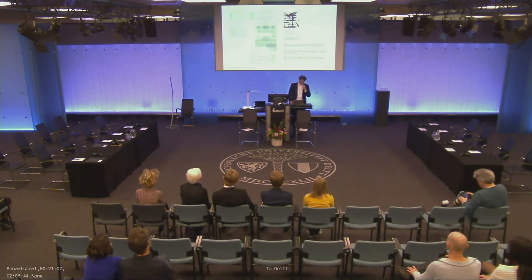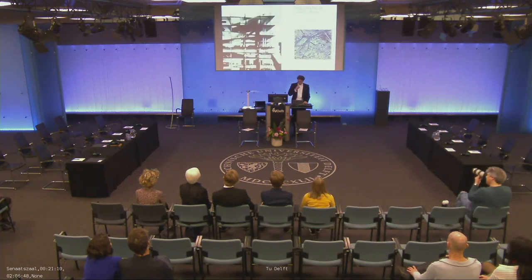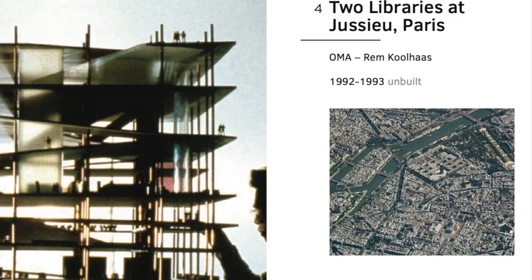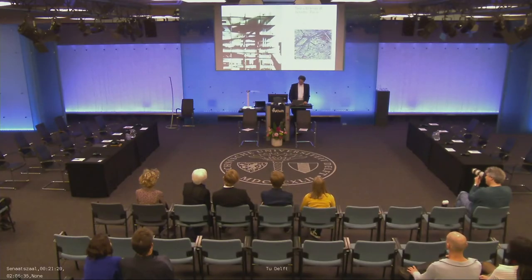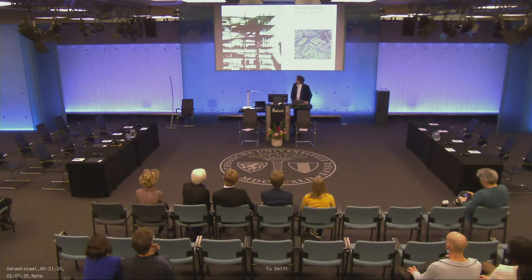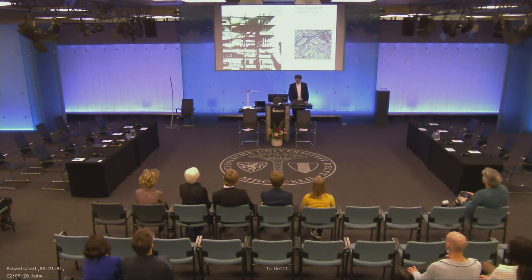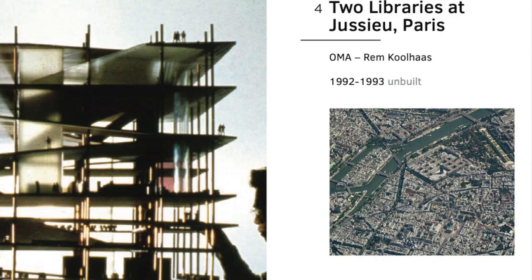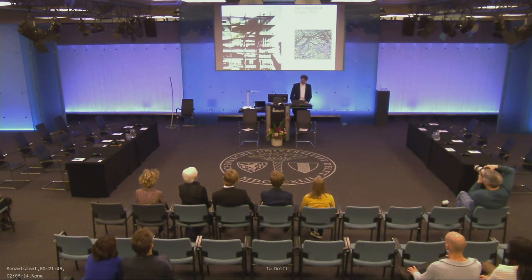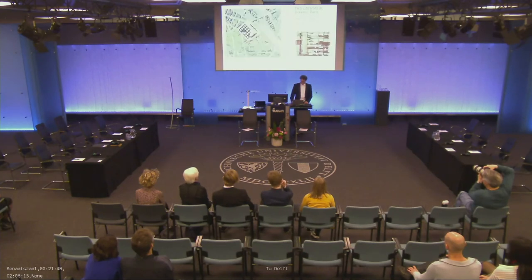One of the projects I'm looking at is two libraries at Jussieu in Paris. Here you see the site. It was designed by OMA — the Dutch Office — and Rem Koolhaas, the leading architect of the office, in a competition in 1992, which they won. Nevertheless, the project was never executed. It is located at the corner of a gigantic university complex, close to the Jardin des Plantes — the oldest public garden of Paris — and close to the Seine. Here you can also see Notre Dame.